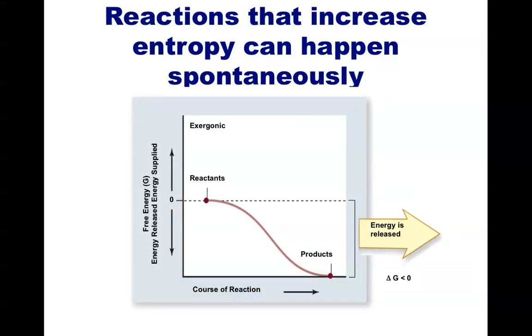In biochemistry, reactions that release potential energy and increase entropy are known as exergonic reactions. If they release this energy as heat, which is the kinetic energy of random molecular motion, they're also known as exothermic reactions.